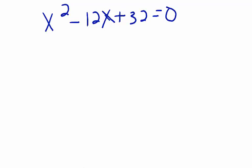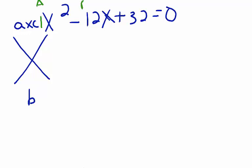Now I have a quadratic equation that looks pretty easily factorable. I'll use the AC method — I'm looking for factors of A times C that add to give me B. Here A is the leading coefficient, which is 1; B is negative 12; and C is the constant term, 32. Factors of A times C is 1 times 32, so I want factors of 32 that add up to negative 12. Clearly negative 4 and negative 8 work, because they multiply to give positive 32 and add to give negative 12. I'll rewrite my trinomial, expanding it to 4 terms and then factoring by grouping.